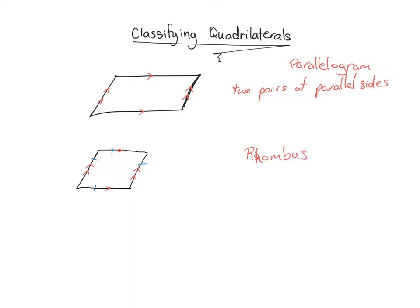A rhombus is a parallelogram with four congruent sides — four sides that are equal in length. We know the four sides are equal in length not because they look equal, but because of the little hash marks. Those four hash marks indicate that those four sides are equal to each other.